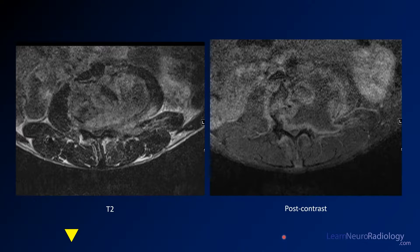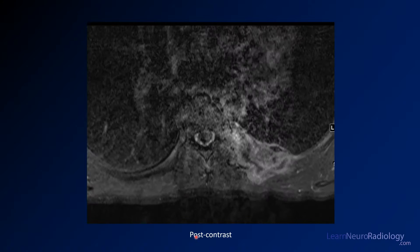You see some axial images again — T2 and post-contrast. Labels have been added so you don't get confused, as it's a little bit hard to tell this is a T2. This image, also labeled, is from a slightly different level — it's a post-contrast image from the lower thoracic spine.